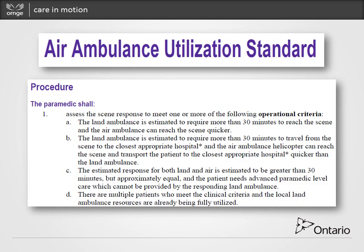Let's start with the air ambulance utilization standard. The procedure for the paramedic is to assess the scene response to meet one of four operational criteria. The first is that the land ambulance is estimated to require more than 30 minutes to reach the scene. The second is that the land ambulance is estimated to require more than 30 minutes to travel from scene to the closest most appropriate hospital, and the air ambulance can reach the scene and transport the patient to that closest hospital quicker than land.